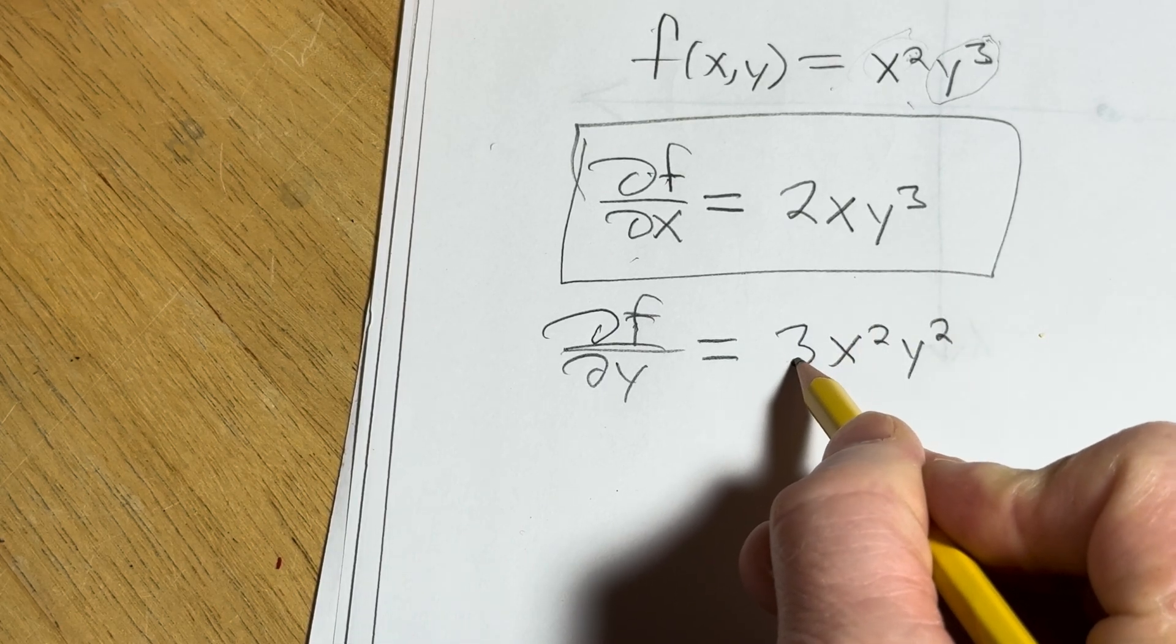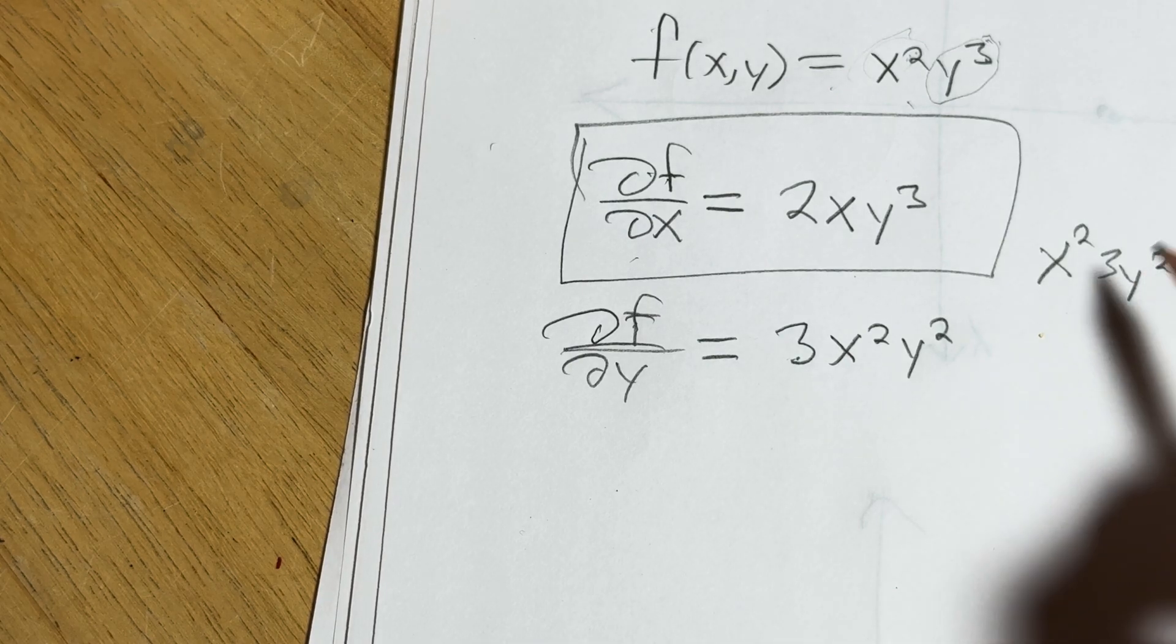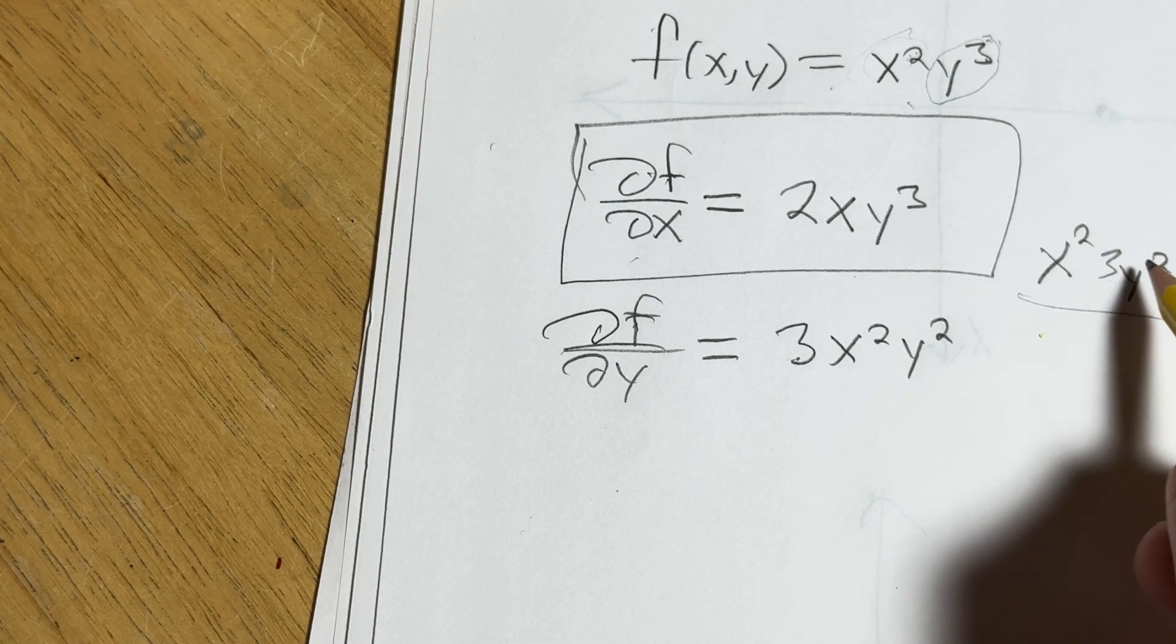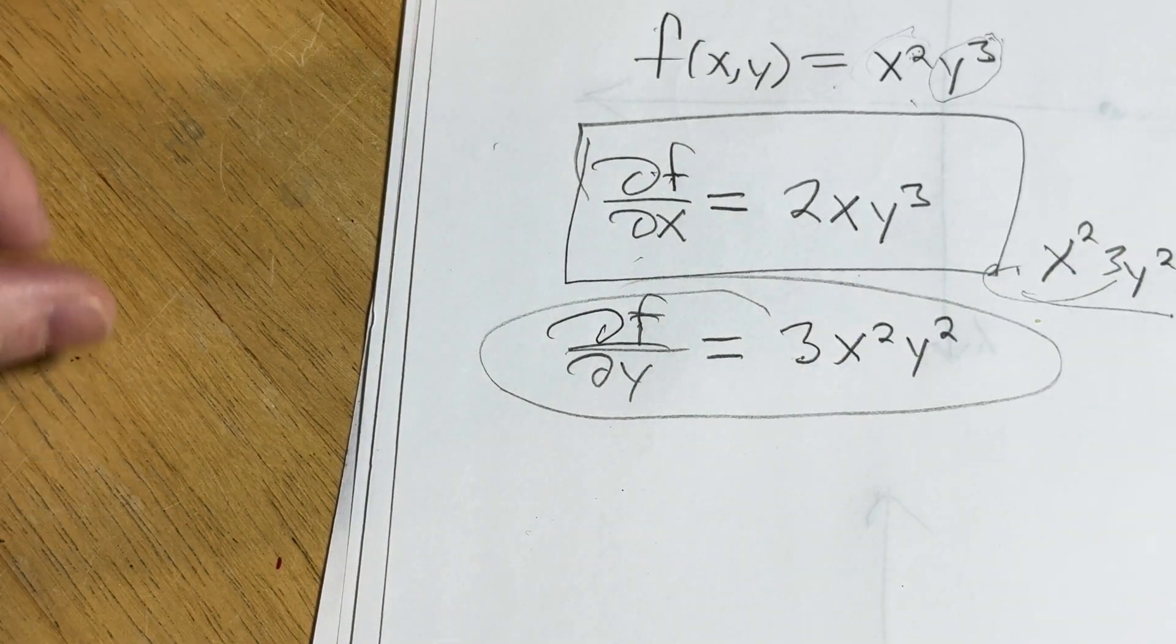Notice how I put the 3 up here. Really, when you do it in your head, it looks like this. But you don't want to leave it like that. That's weird, right? So you just put the 3 in the front. And then here we are. So those are the partial derivatives.